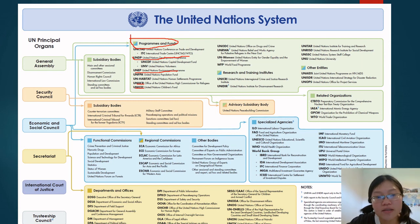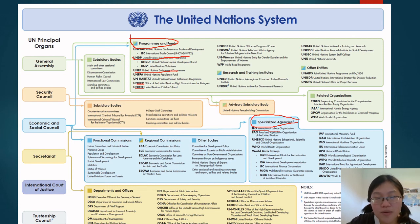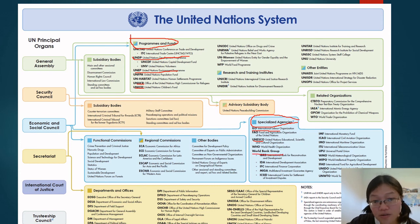These programs and funds are directly under the General Assembly, so all countries participate in them. Then we have the Specialized Agencies, which include the ILO — International Labour Organization — that works specifically on migrant and local laborers' welfare; UNESCO, which I used to work with, focusing on scientific, cultural, and educational activities; and the World Bank Group, which is also involved as a UN specialized agency. So even though the World Bank is a huge organization, it is under the United Nations.